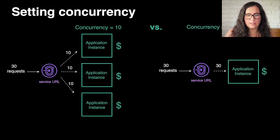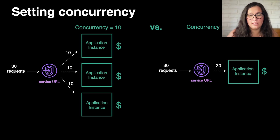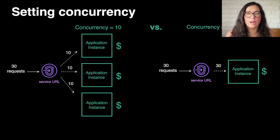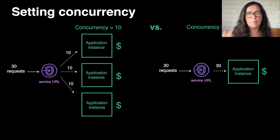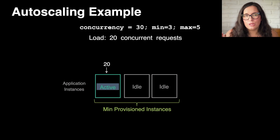Let's look at concurrency. If you have a maximum concurrency of 10, with 30 requests incoming you will have 10 requests per instance. You can also set the concurrency to 30 and then one instance will take all 30 requests. This is something you may need to test for your specific application — it requires a little calibration. AppRunner will scale out, but it's up to you to define this number. You need to do some balancing based on how much compute those requests take.